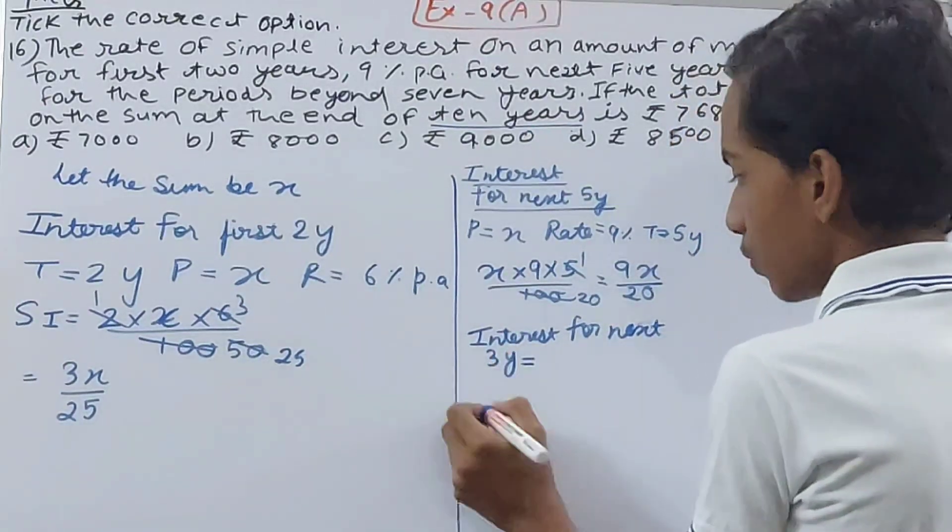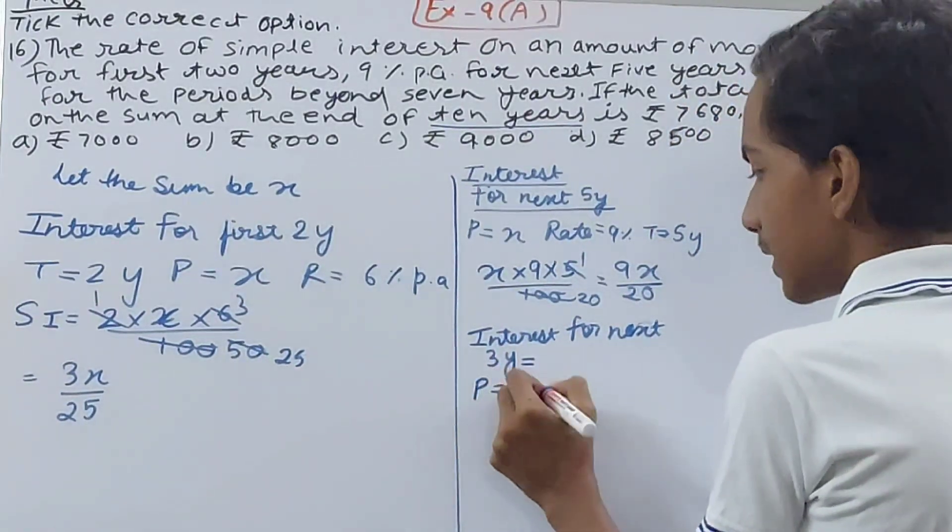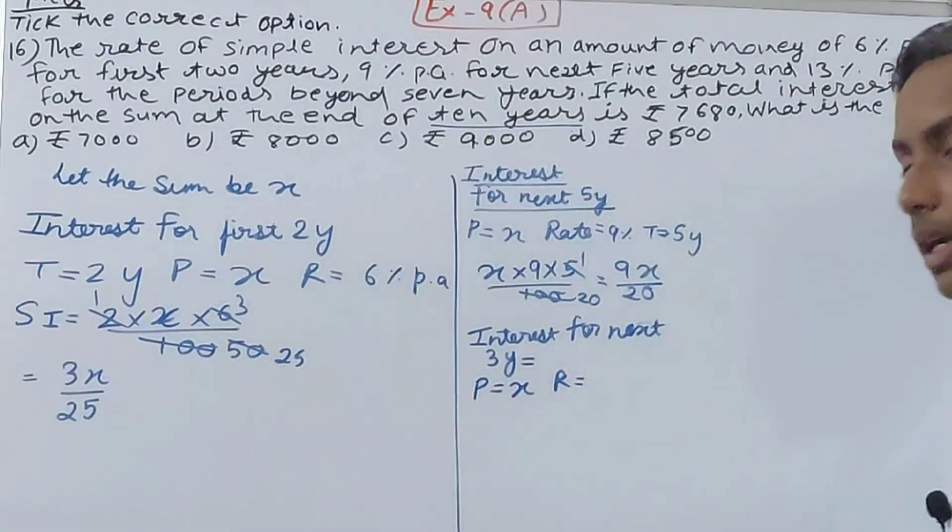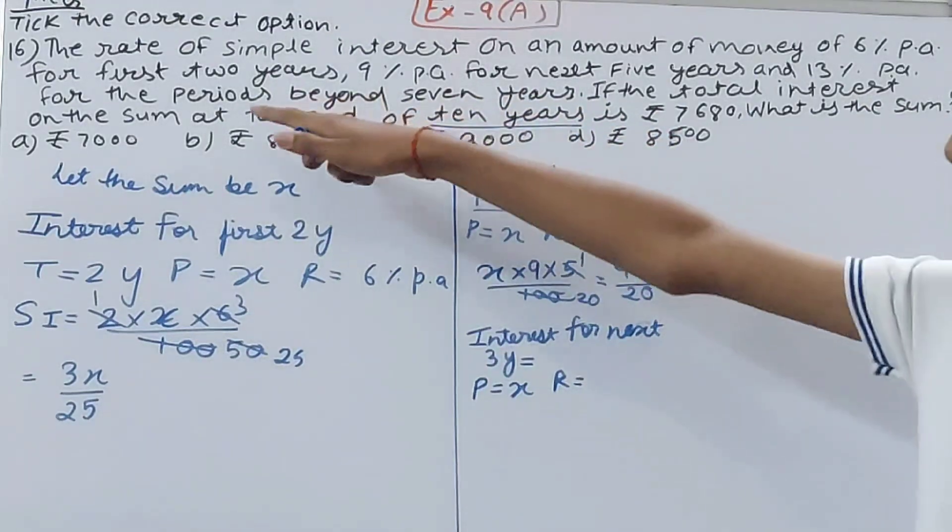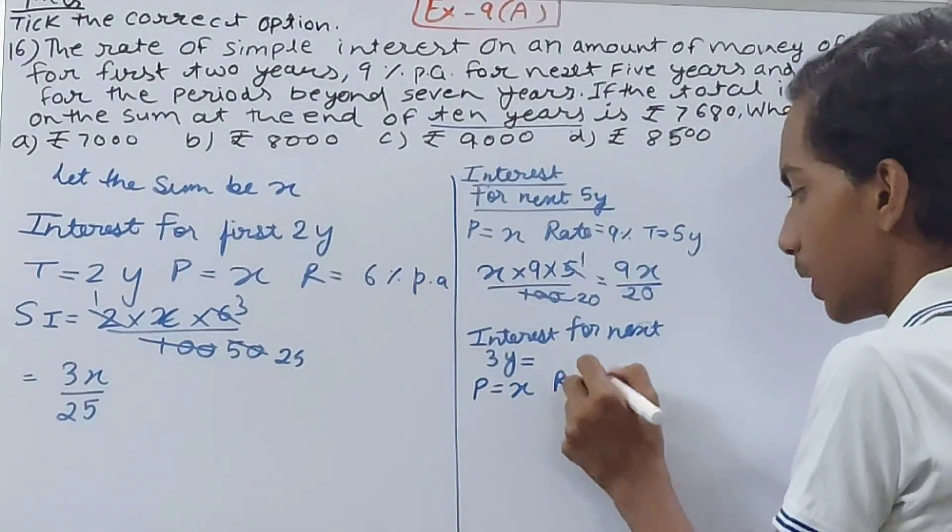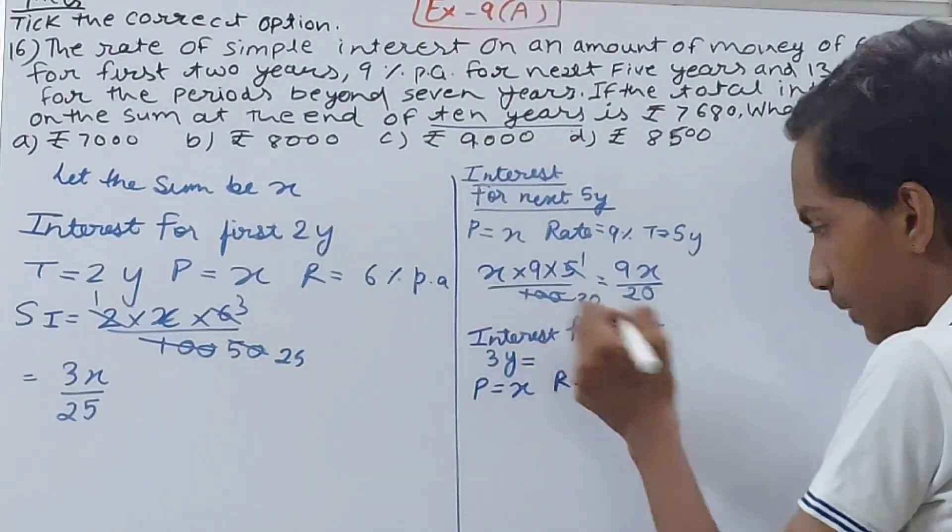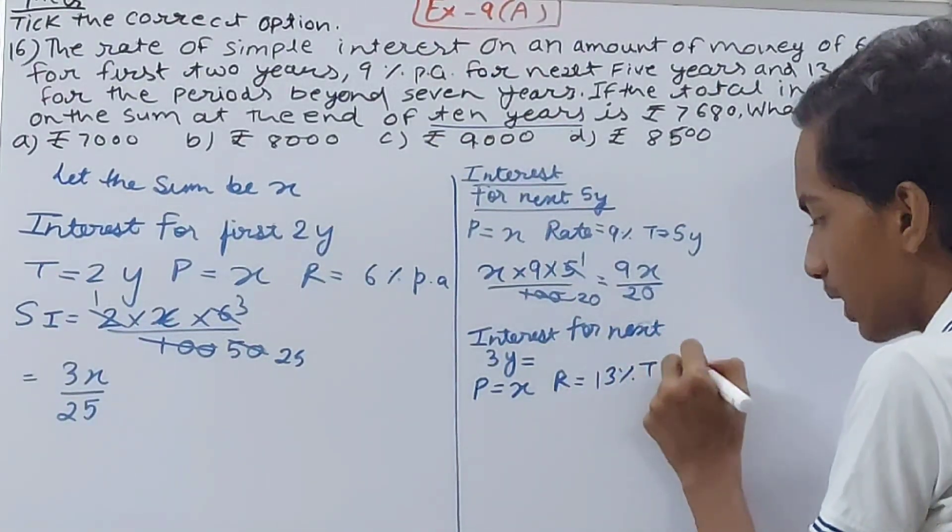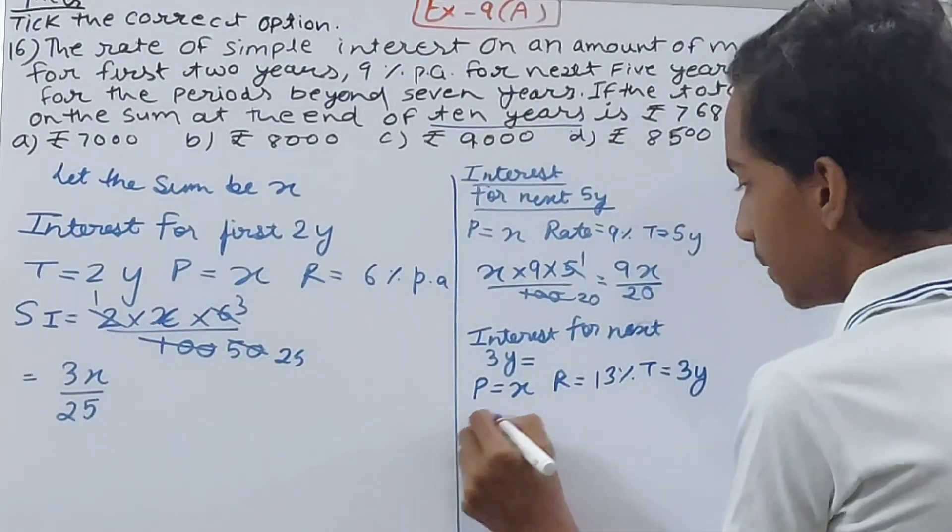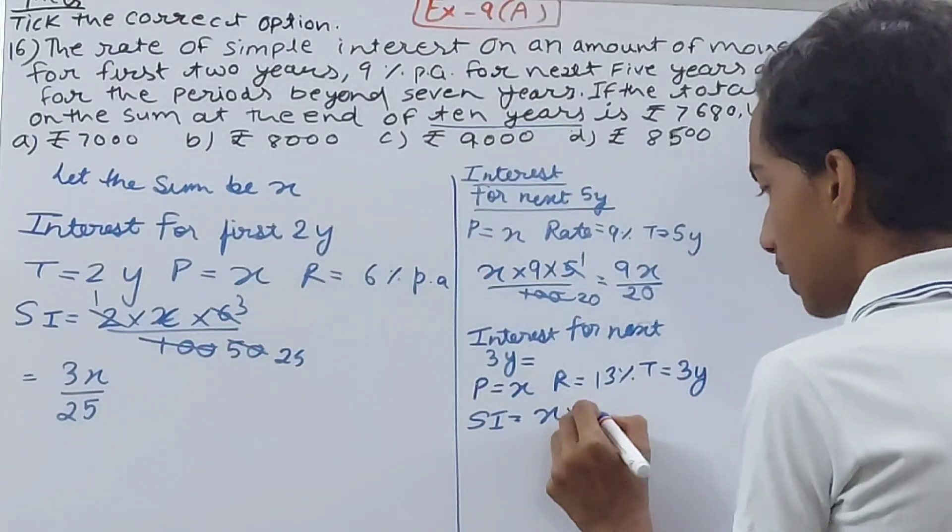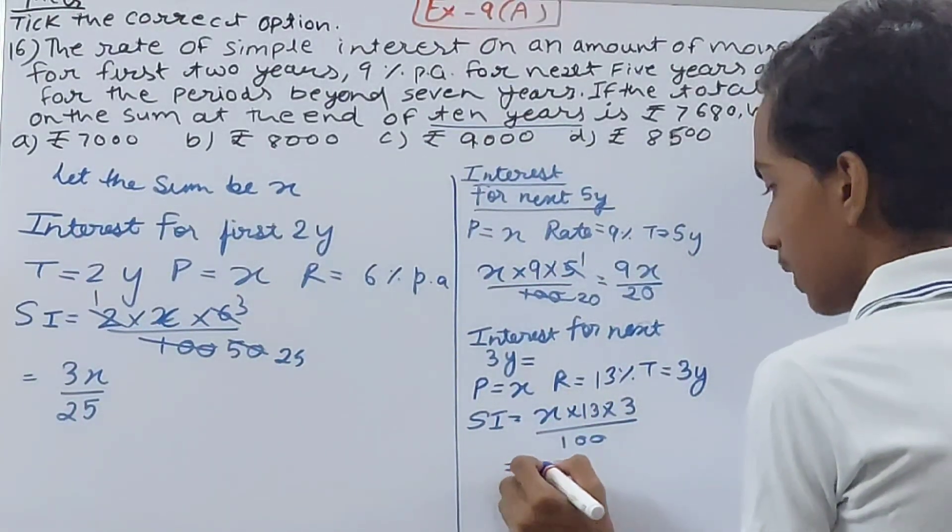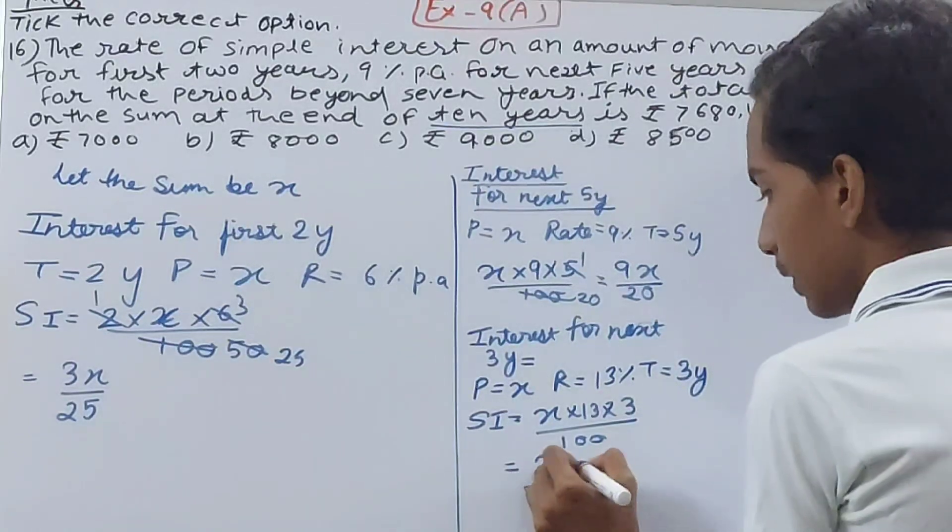Three years are left. So interest for the next three years will be: principle x, and the rate now here, beyond seven years, for the periods beyond seven years, that is 13% per annum. So 13%, and time is three years. So the simple interest will be x times 13 times 3 by 100, that will be 39x by 100.